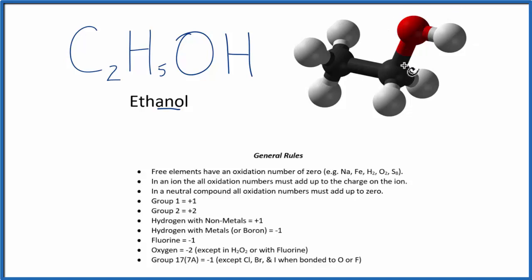So to figure the oxidation numbers out, we have some general rules we'll follow. Let's start by writing down what we do know. We know that hydrogen, when it's bonded to a non-metal, that'll be plus one. Carbon's a non-metal, so each one of these hydrogens is going to be plus one.